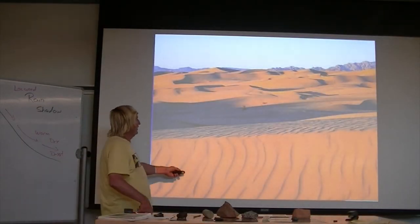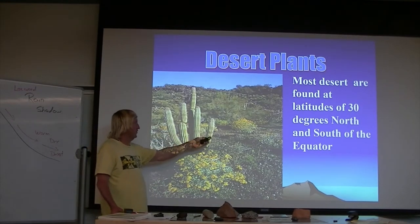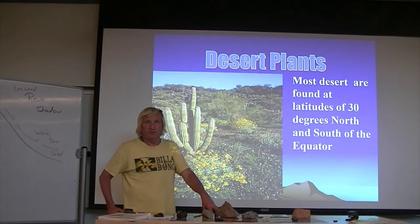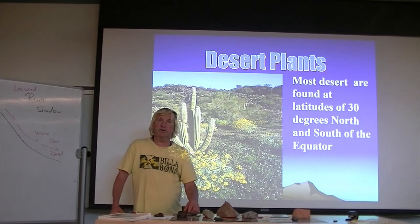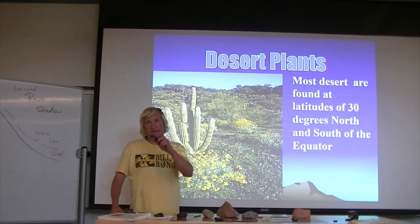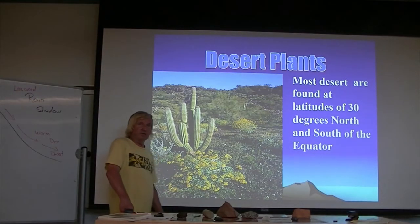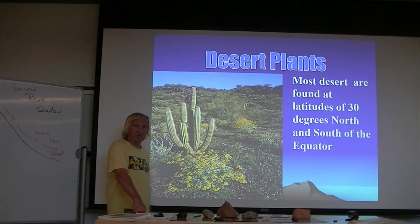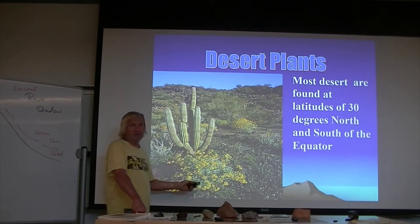Some deserts are very sandy where nothing grows; others are well-populated. Most deserts are found at 30 degrees north and south of the equator. In the western United States we have the Great Basin Desert (northern Nevada, northern Utah), the Mojave Desert (Barstow, Palm Springs area), the Sonoran Desert (southern Arizona), and the Chihuahua Desert extending into southern Arizona and California. Deserts are named and identified by their unique plant species — for example, the saguaro cactus is an indicator species for the Sonoran Desert and is not found in the Mojave or Great Basin Desert.